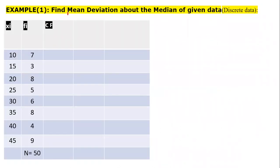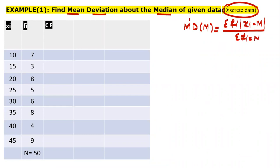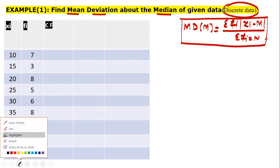Now, how to find out mean deviation about median of discrete data. First of all, formula should be there. Mean deviation about median equals summation Fi |Xi minus M| upon summation Fi. That is equal to N. This is very important. According to this formula, we will make the table. Let's see how to make it.